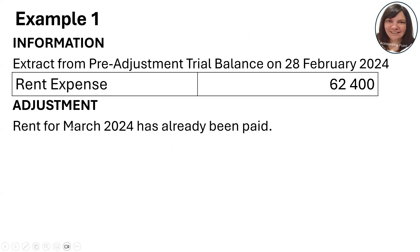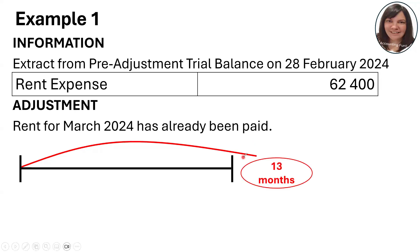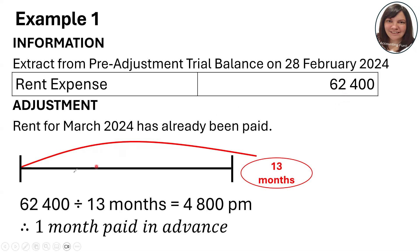Let's look at four examples of different types of transactions you will see in your tests. Example one: this is an extract from the pre-adjustment trial balance for 28 February 2024. It gives us a rent expense balance of 62,400 — the physical amount paid for rent expense for this period. It says that rent for March has already been paid, meaning we've already paid for next year.